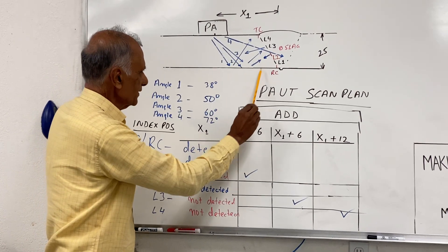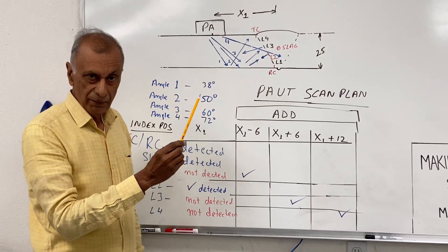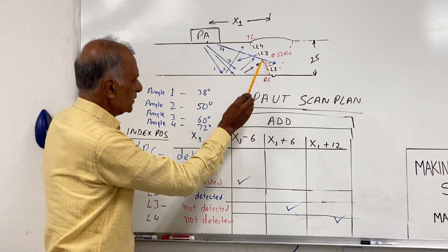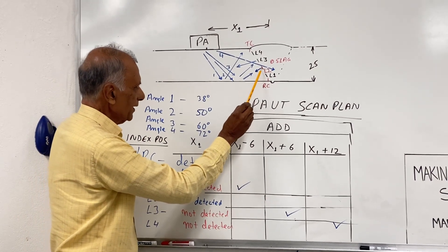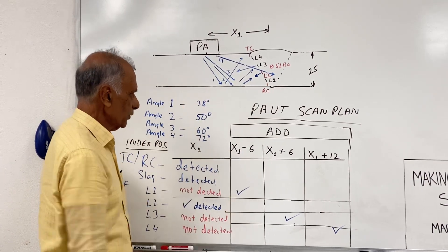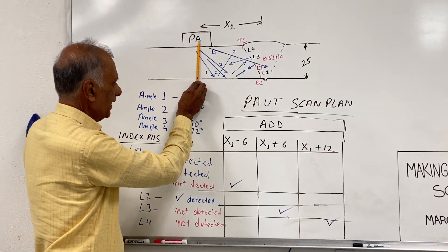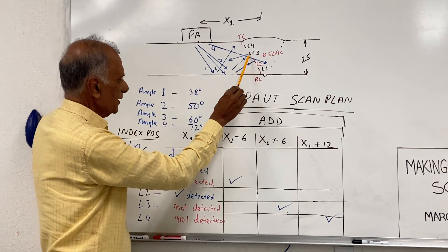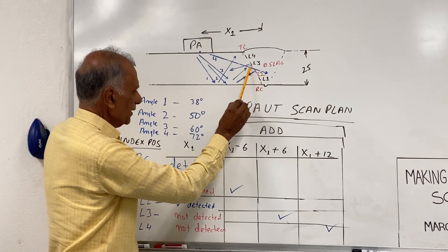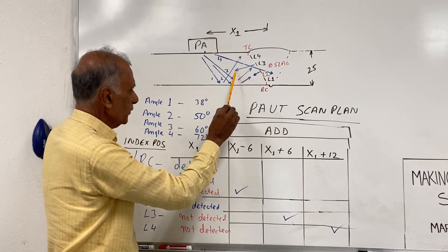Angle of incidence equals to angle of reflection. In order to see this, it has to hit at 90 degrees for the sound to be reflected back here and back to the probe. Now if I just keep the probe here and then scan it, if you look at this lack of fusion L3, the sound is going here and then it's reflecting here. The reflected sound is not going back to the probe.